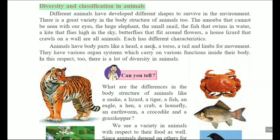If you observe carefully the structure of these animals, you can conclude that each and every animal has different characteristics. They have various organ systems — whatever body organs are there, there is variety in those organ systems. Through those organ systems, various functions inside the body occur: circulation, digestion, respiration, excretion. For each and every process a different organ system is there, so there is a lot of diversity — that means variety — in animals.